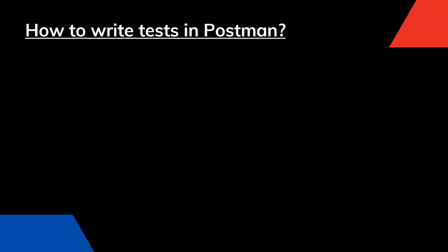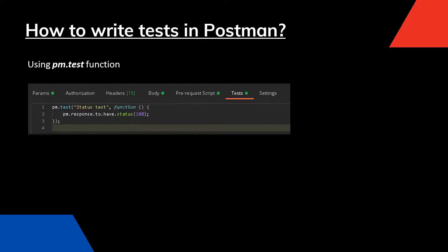Now let's talk about how we can actually write these tests. We can use the pm.test function to create a test in Postman. Here's an example where we are verifying the status of the response that we got back. If you notice, we're using the pm.test function and in the brackets, we're writing the name of our test which is called 'status test'. Then we create the function, and within the curly brackets, we write pm.response.to.have.status(200). So we are basically saying that the response should have a status of 200.